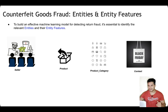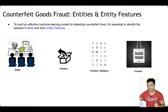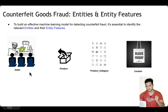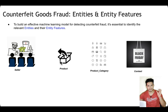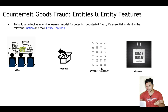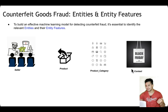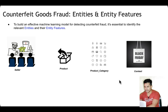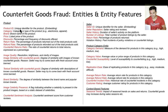Now, what are the entities and entity features? To build an effective ML model for detecting counterfeit products, the key entities are: seller, product, product category, and context. For the seller entity: a seller who has already committed counterfeits in the past is at high risk again, and a poorly rated seller may also be at risk. For the product entity: reviews indicating fakeness can flag a counterfeit product. Product categories susceptible to replication due to ease and high value are also important. During special sales events, counterfeit goods tend to increase on the platform, making contextual features relevant.